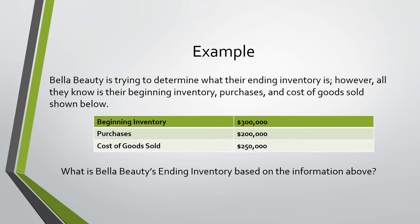In this example, Bella Beauty is trying to determine what their ending inventory is. However, all they know is their beginning inventory, purchases, and cost of goods sold shown below. Beginning inventory is $300,000, purchases is $200,000, and cost of goods sold is $250,000.